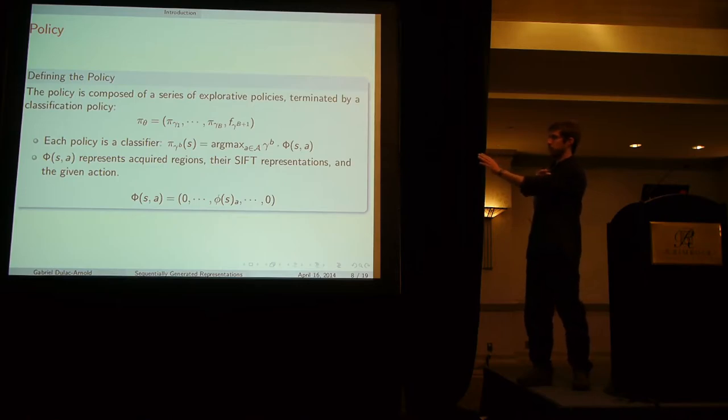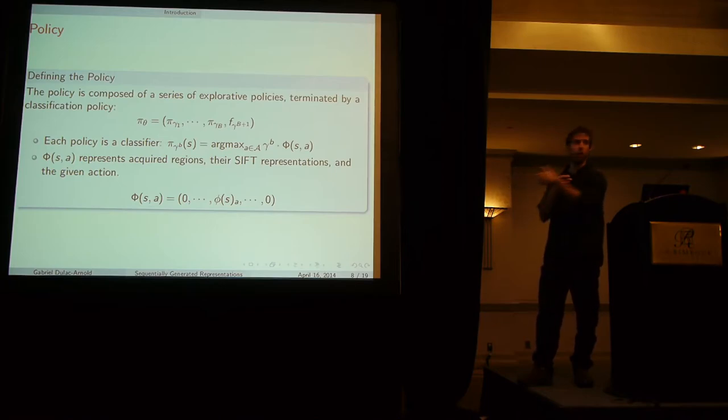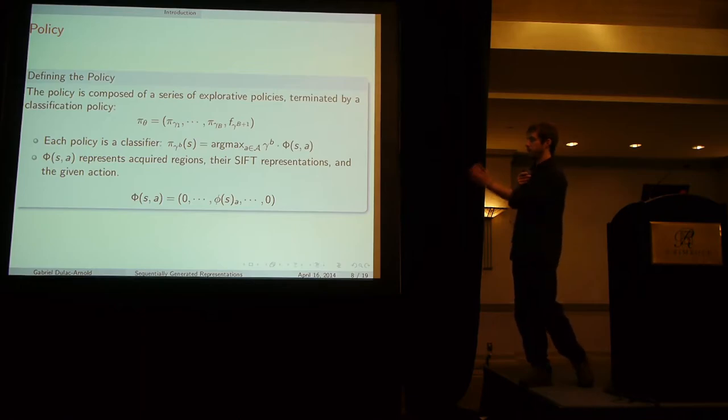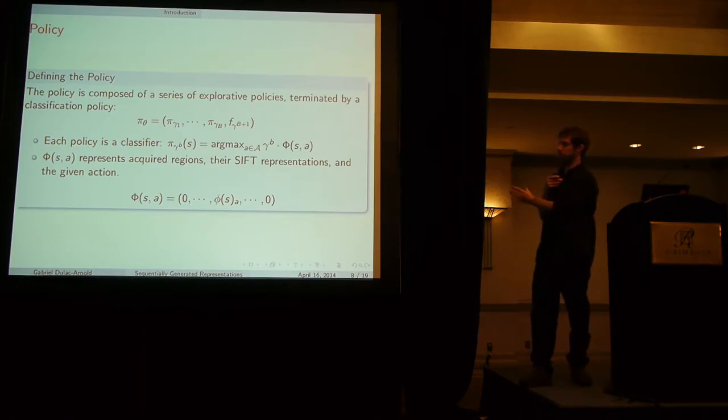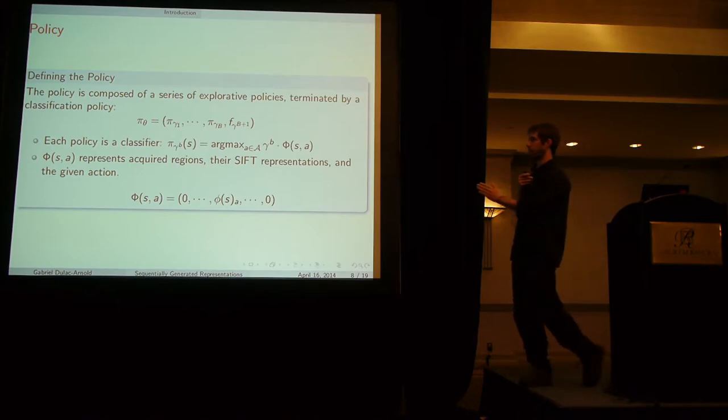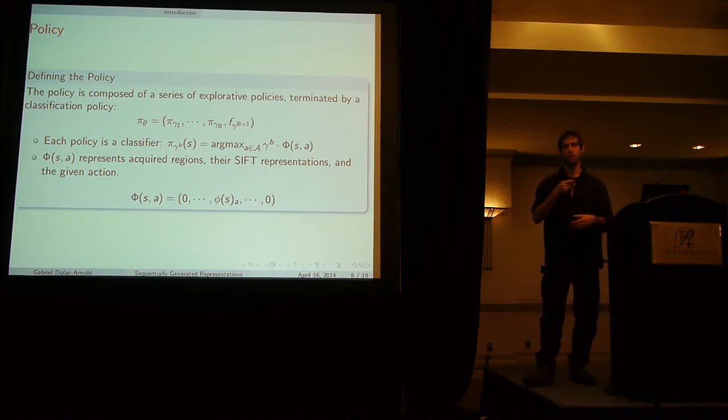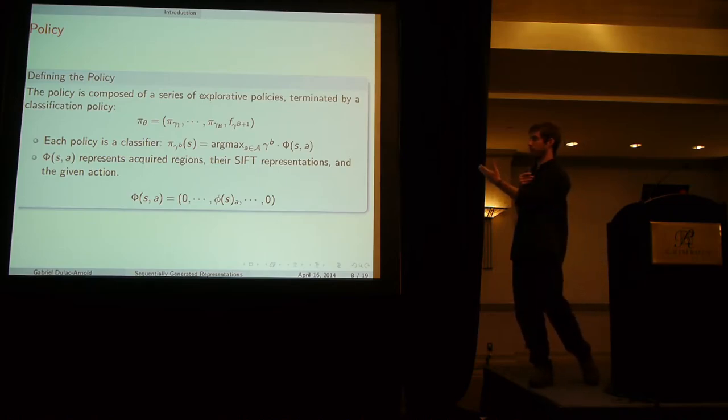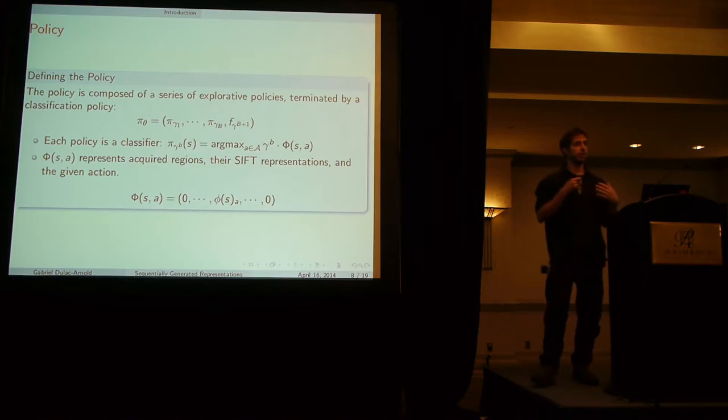Each sub-policy is a classifier in and of itself. It takes in this feature vector, phi of s, which is our matrix of acquired set features, and places it someplace in this big action vector. It's a very sparse vector. The state is just offset by which action we're looking at. Then we do an argmax to find what the best action is for a specific context. We have a simple linear classifier parameterized by theta that basically gives us what the best action is to do in a specific context.